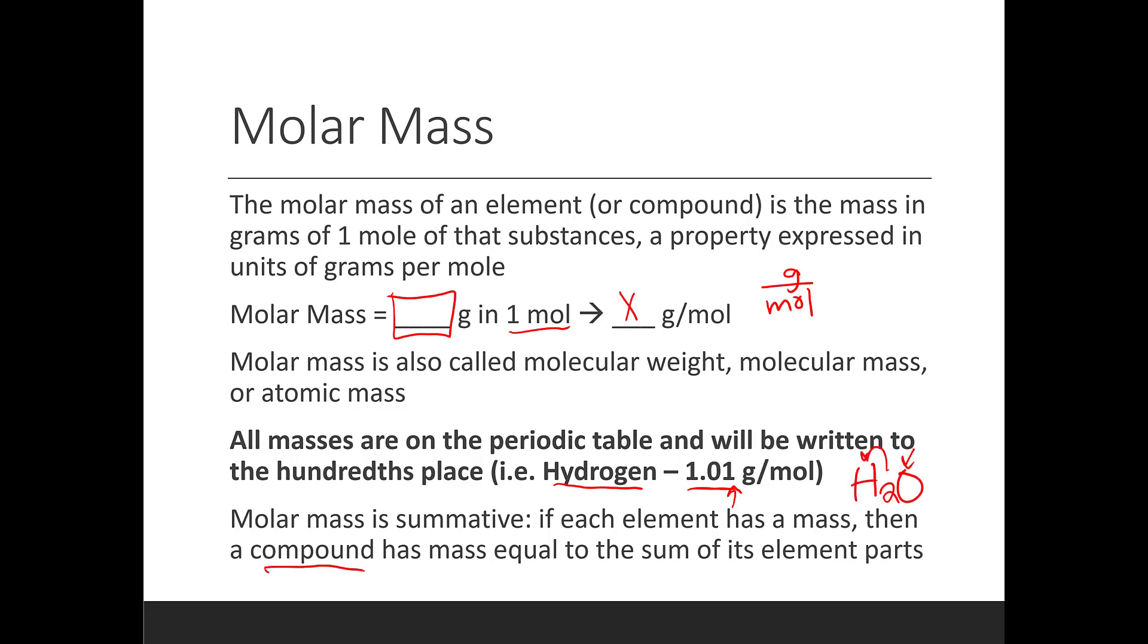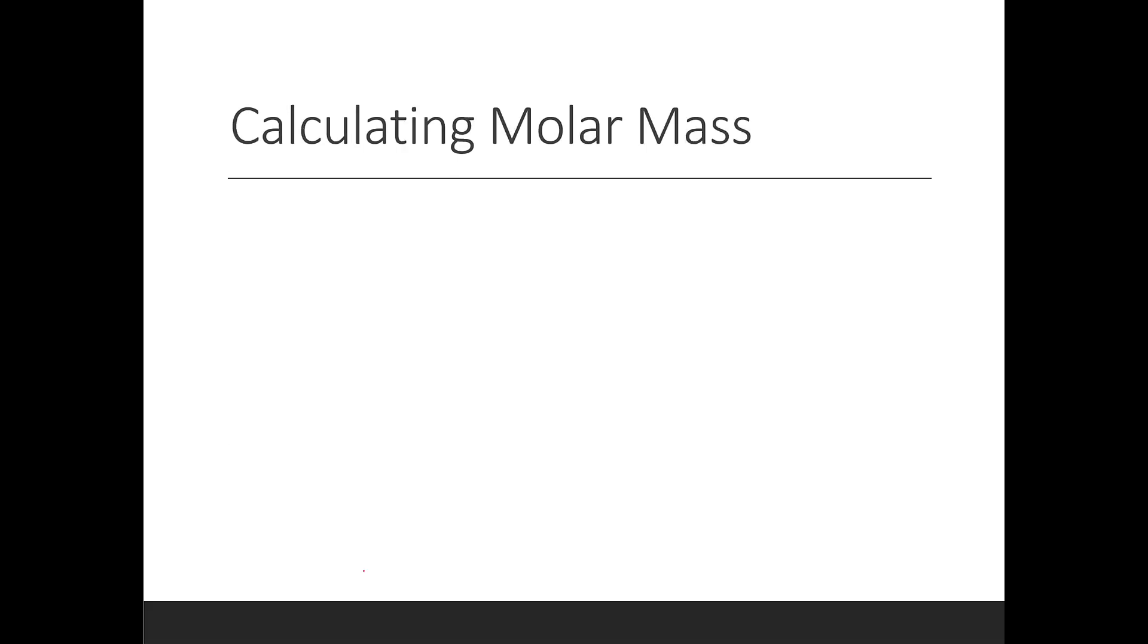So let's do some examples. How do we calculate molar mass? Well, if we have an element, we don't have to do any calculating. All we need to do is look at the periodic table. In the periodic table, the molar mass of helium is listed. It's 4.00. Then we just add units, grams per mole. Done. That's the whole question. What is the molar mass of helium? Four. Beautiful.